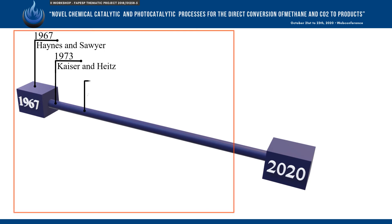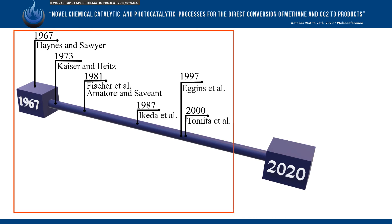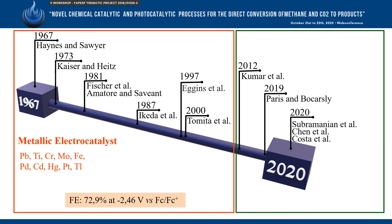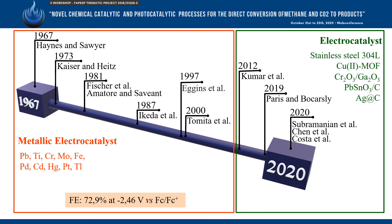Until the 2000s, the majority of publications were about metallic electrocatalysts in a non-aqueous electrolyte. Among these metallic electrodes, metallic lead presents the highest selectivity and Faradaic efficiency. Although there are fewer publications in the 21st century, research has been developed using other types of materials instead of pure metallic electrocatalysts. Still, lead-based electrocatalysts showed better results with improvements compared to previous publications.